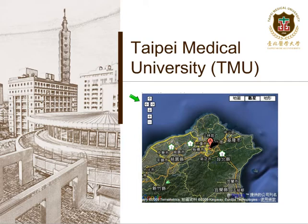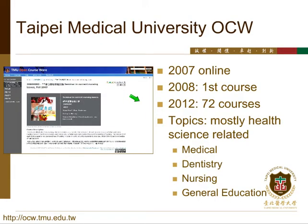This is Taipei Medical University. We are located in Taipei City, which is the biggest city in Taiwan — a small island near China. Taipei Medical University is a medical professional university. We have had our OCW site online since 2007 and our first course online in 2008. Right now we have 72 courses. Because we are a medical professional university, most of the OCW content is health science related, such as medical, dentistry, and nursing. We also have some general education courses listed on our OCW site.